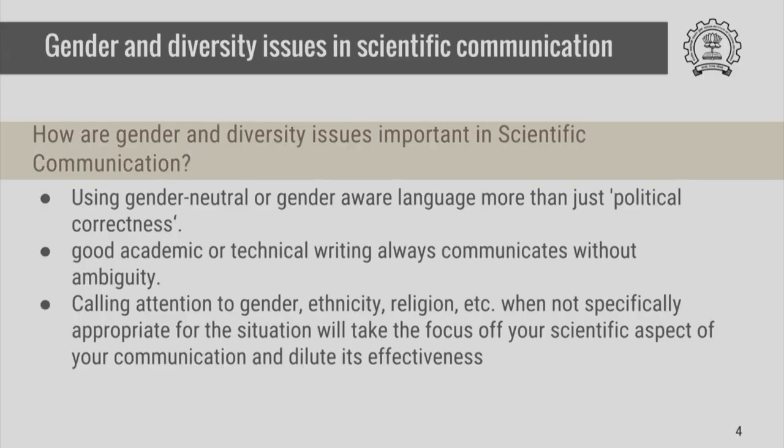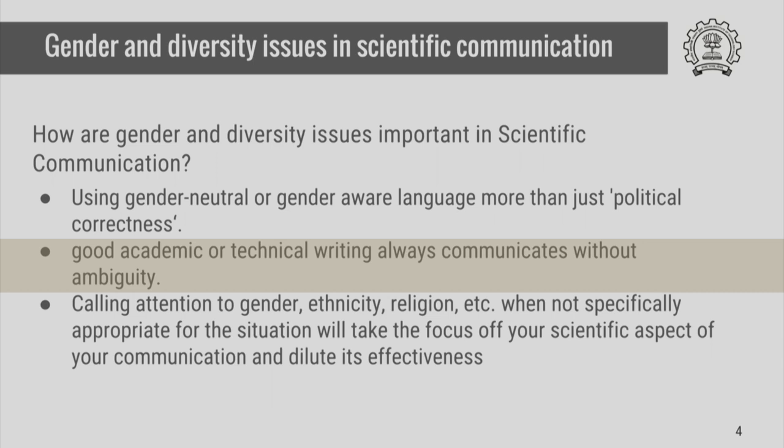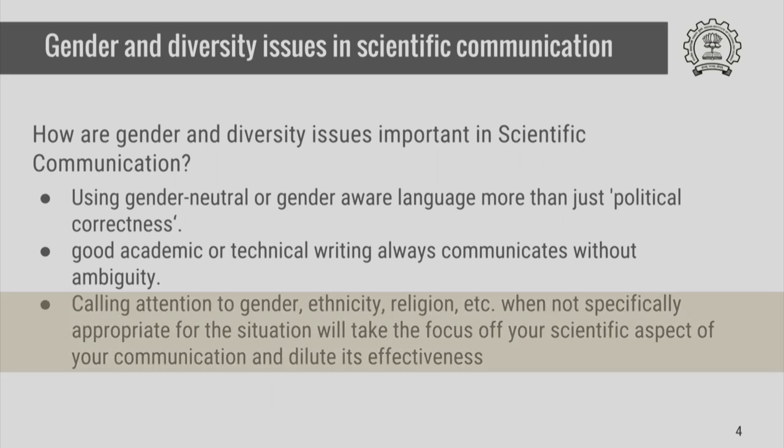So why and how are these issues important in scientific communication? We wish to suggest that this is more than just political correctness, though that is not a bad reason either. All good technical communication always communicates without ambiguity, without vagueness and with absolute clarity. Calling attention to gender, ethnicity, religion, and so on when not specifically appropriate for the situation — when it unconsciously creeps into your language — takes the focus away from the scientific aspect of the communication. A lot of research has shown that this dilutes the effectiveness of communication despite the excellent quality of what one wishes to say.